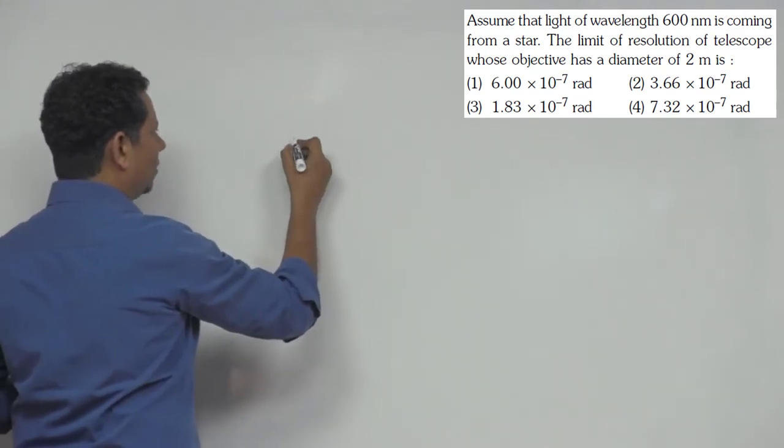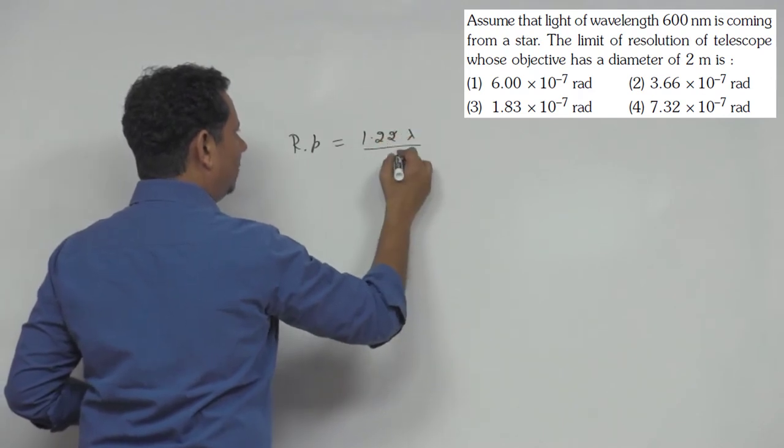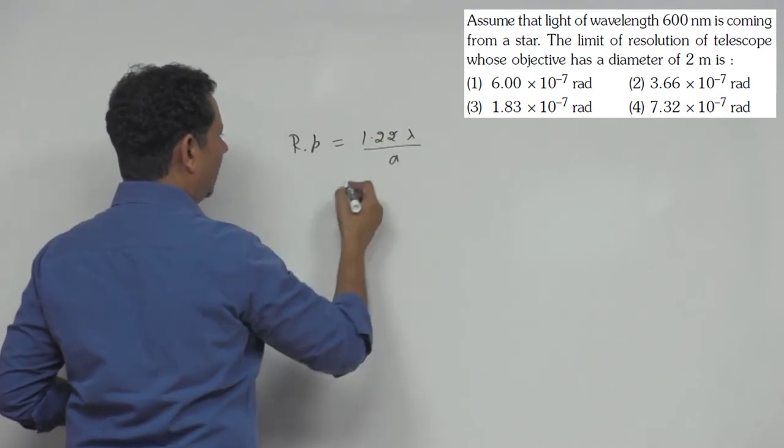We know that what we call resolving power, we write as 1.22 lambda divided by D, or you can call it A if you prefer.